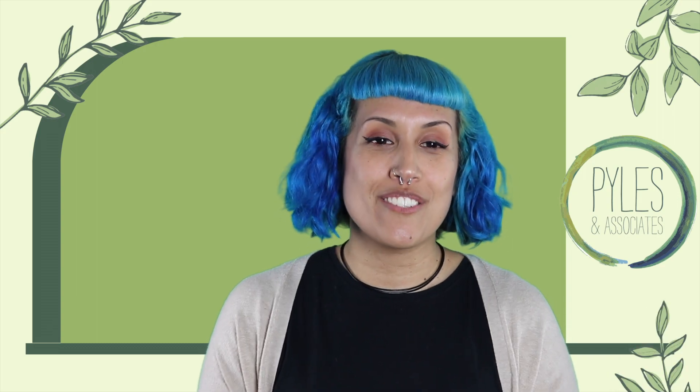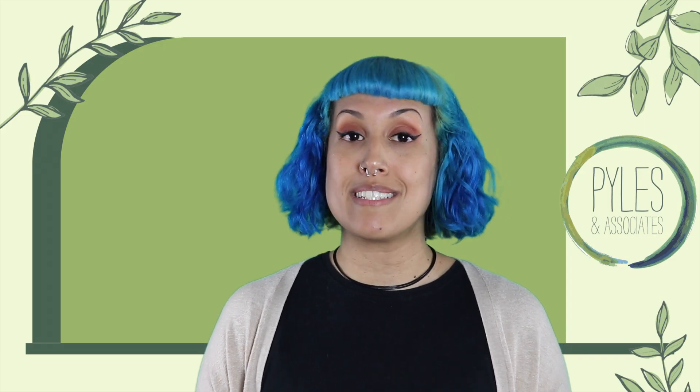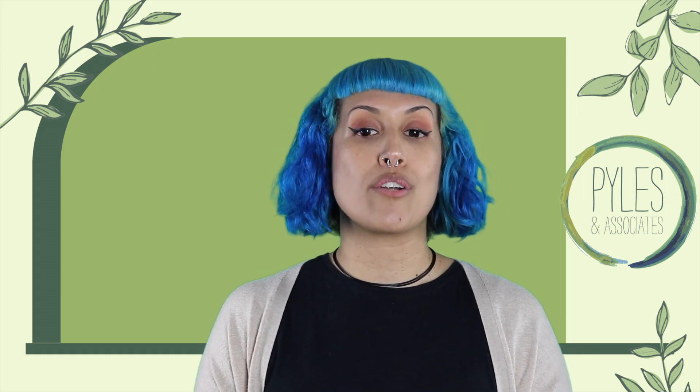Now let's move on to external validity. This means that the results of your experiment or your treatment are generalizable to other clients, subjects, settings, or behaviors. For example, let's say that your toileting protocol — your independent variable — shows an increase in those toileting attempts, your dependent variable. And you want to try the same protocol with another client. This would be generality. If that particular protocol increases the toileting attempts for that client, your data would prove that it is effective and also has external validity.